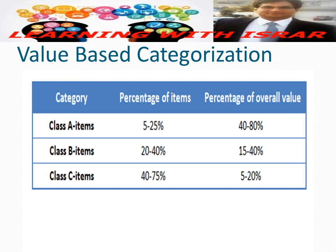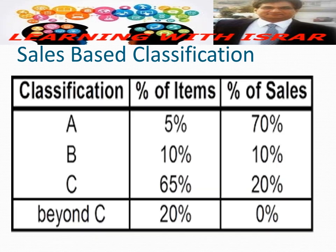You can segregate or divide your inventory in this way, and you can also customize your classification further. For example, you can have a segment where items are around 10 percent of items with 10 percent of sales, and another where items are 65 percent with 20 percent of sales. You can go beyond three categories and customize your ABC analysis according to your requirements.